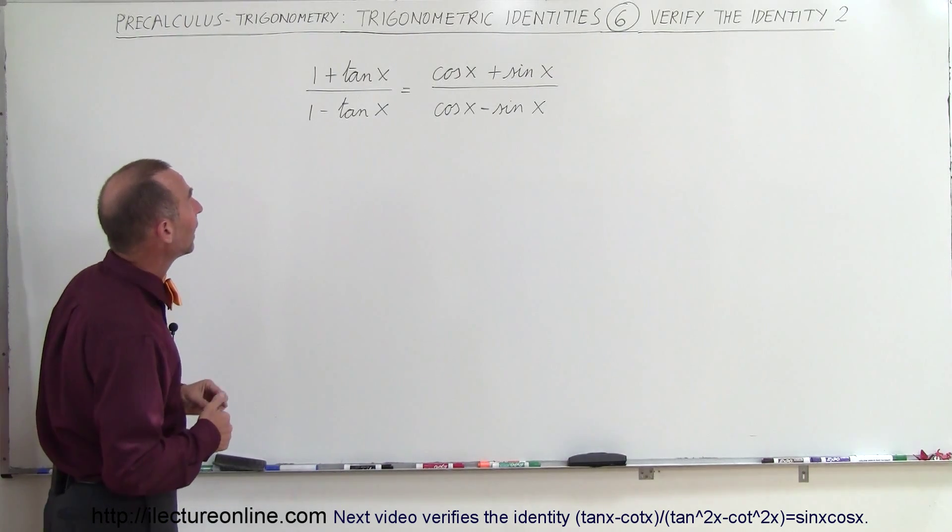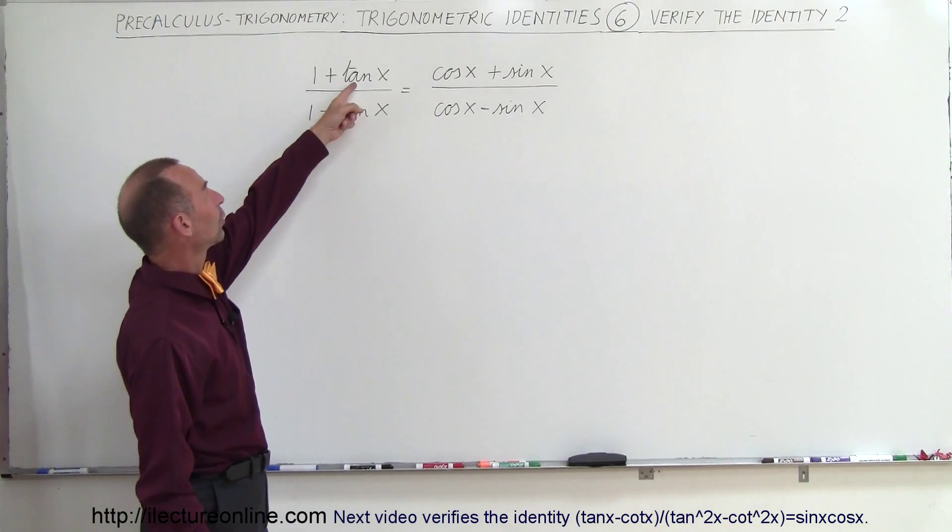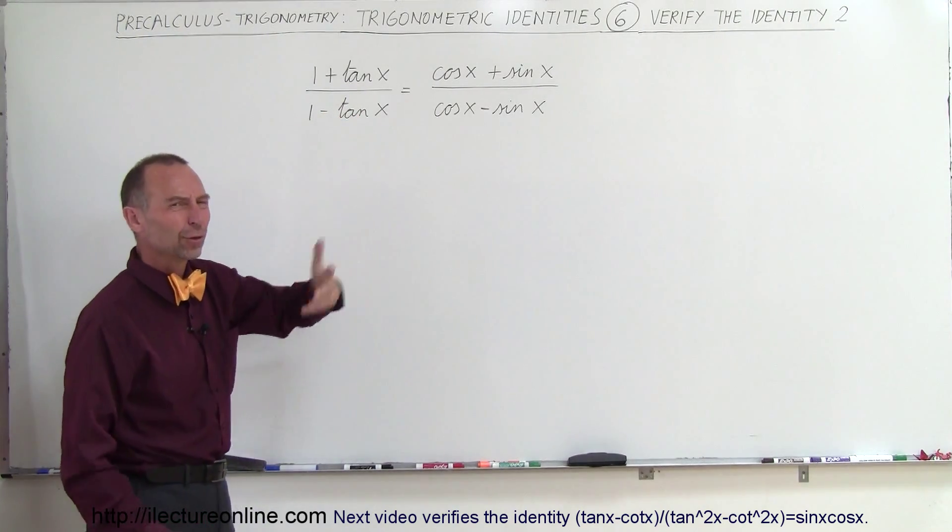And again, let's start with the left side. Here we're going to use the equivalent for the tangent. We're going to write it as the sine over the cosine and see what happens.